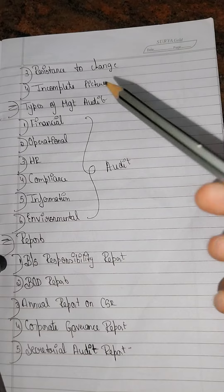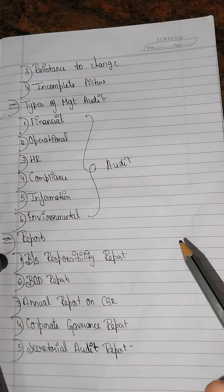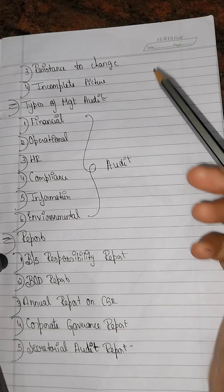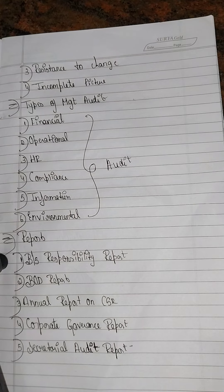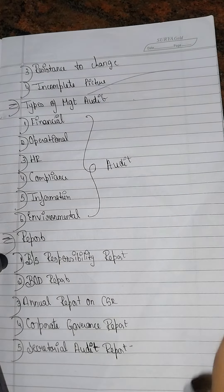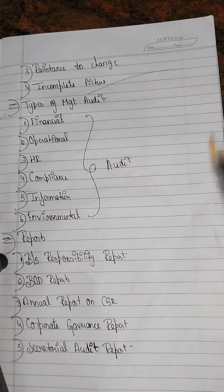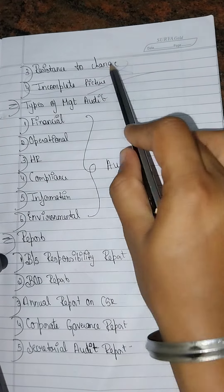Next is resistance to change. When a company needs to change, if the environment remains the same, it will be difficult to adopt. Another disadvantage is an incomplete picture — auditors may not get all the information, as some information may be hidden.